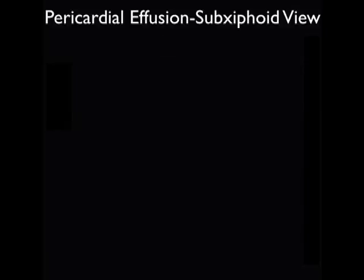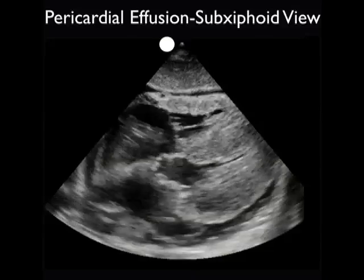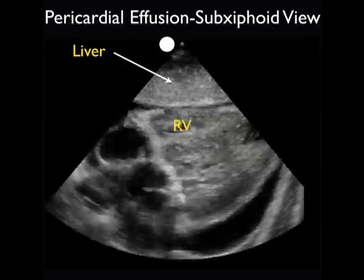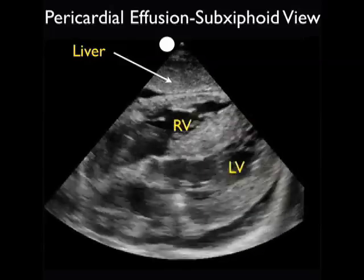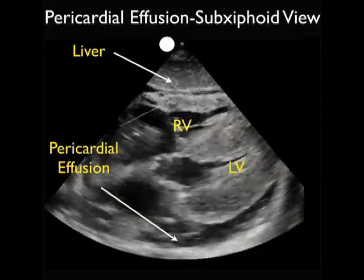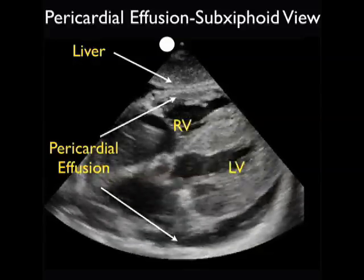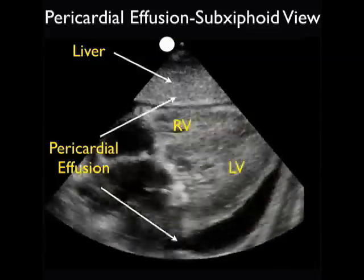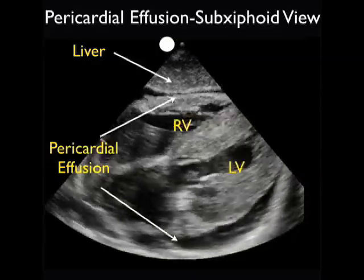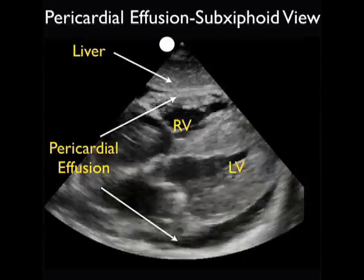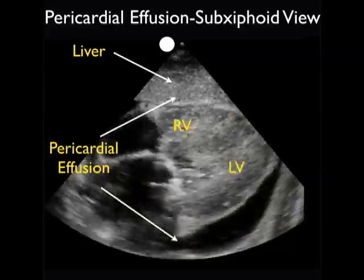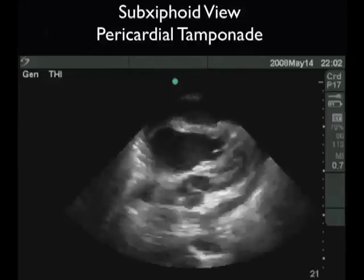Here's a patient who presented with renal failure and acute shortness of breath. Again looking from the subxiphoid plane, we see a strip of liver anteriorly, the right ventricle just below the liver, and the left ventricle posteriorly. Notice how hypertrophic the walls of the left ventricle are in this patient. We also appreciate a dark fluid collection both anteriorly just below the liver and above the right ventricle, and posteriorly below the left ventricle, consistent with a circumferential or large pericardial effusion. When we see a large pericardial effusion on bedside echo, our next move is to look for signs of cardiac tamponade.